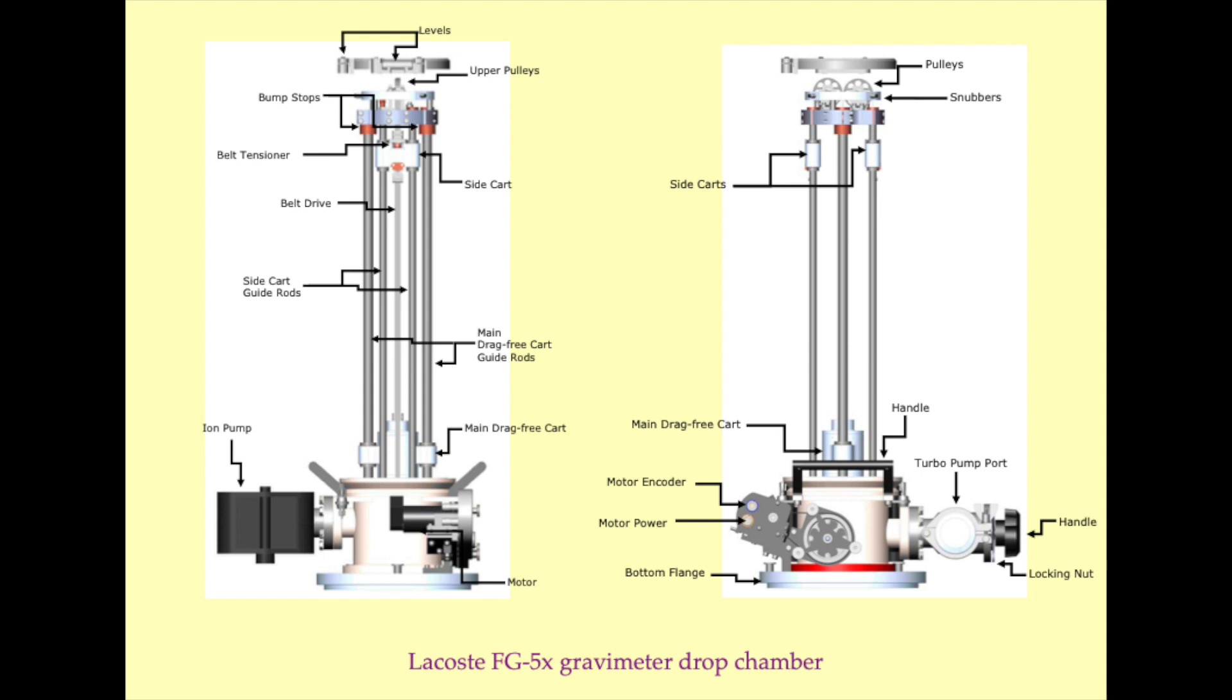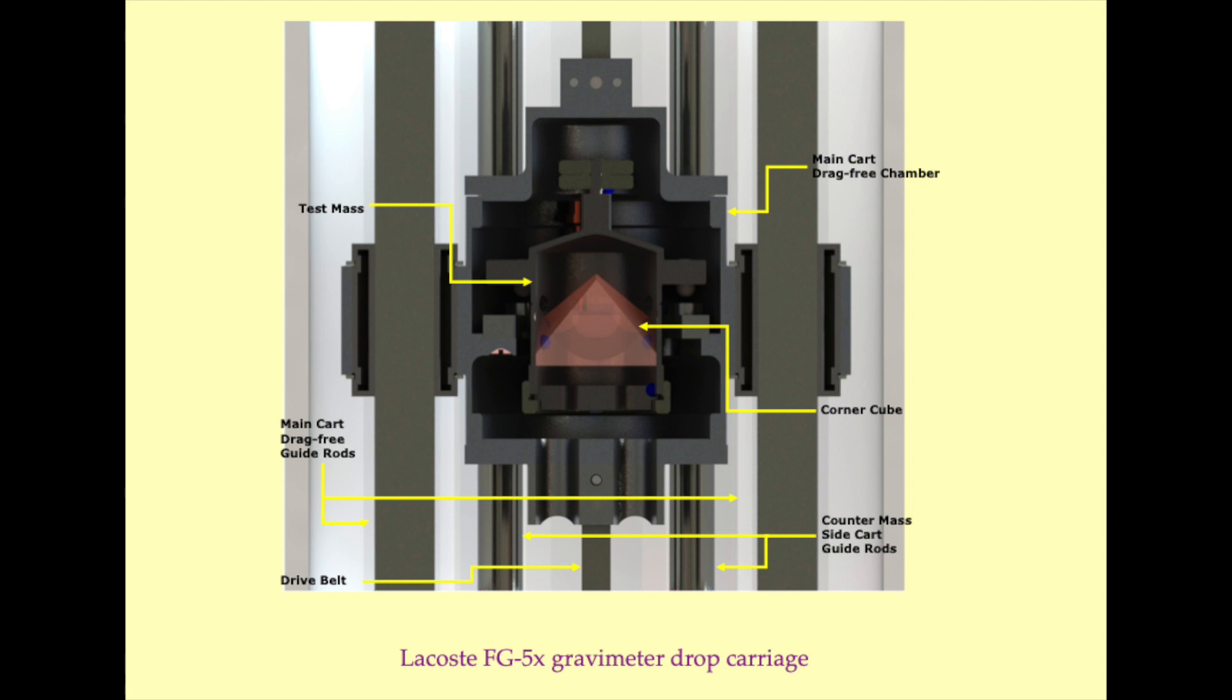It will doubtless come as no surprise that these basic physical principles have already been applied to the design of a real-world instrument. In this case, the Lacoste FG-5 Absolute Gravimeter. This slide shows the mechanisms that are found in the interior of the FG-5's drop chamber. These mechanisms include the drag-free cart, the rails for the drag-free cart, the counterweights, the motor and adapter for the drag-free cart, and the vacuum pump.